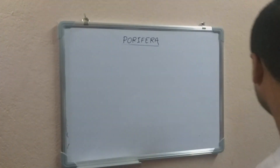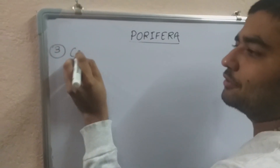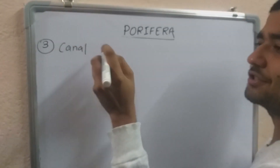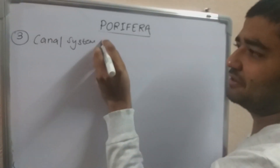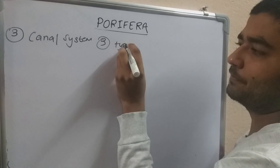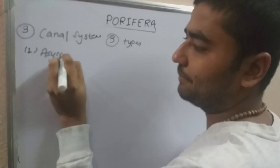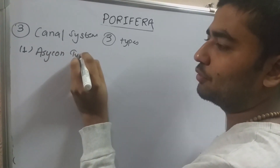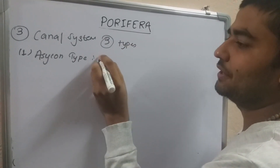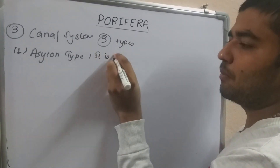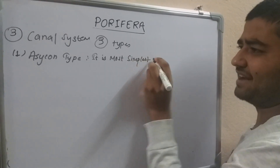Now regarding the canal system: I am going to discuss 3 types. The first is the Ascon type, which is the most simplest canal system.